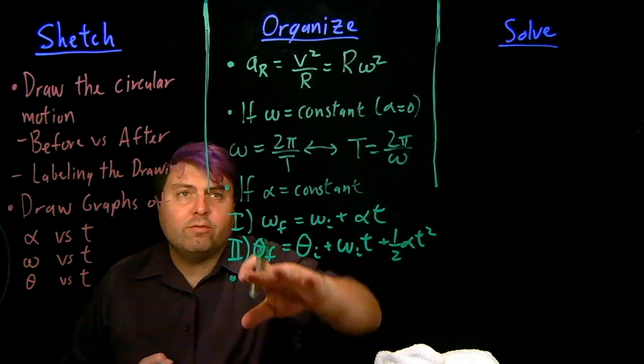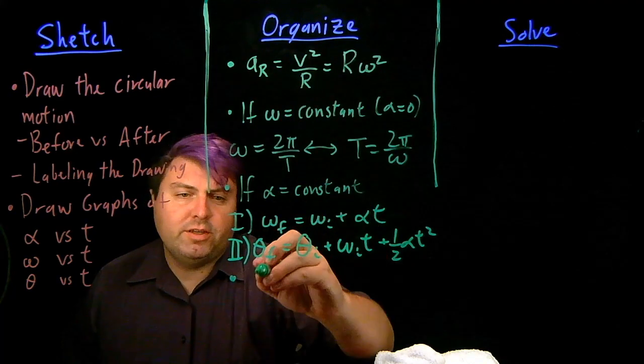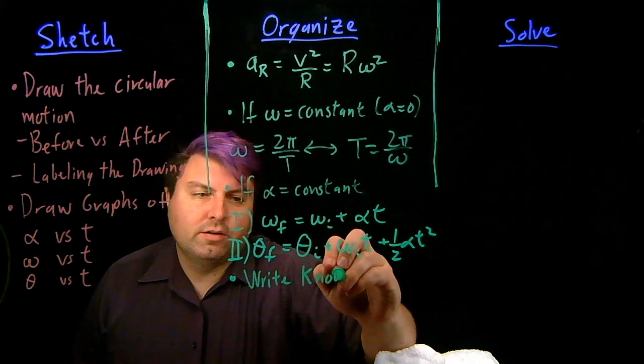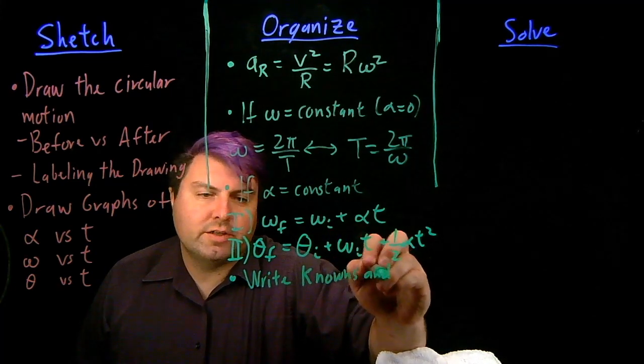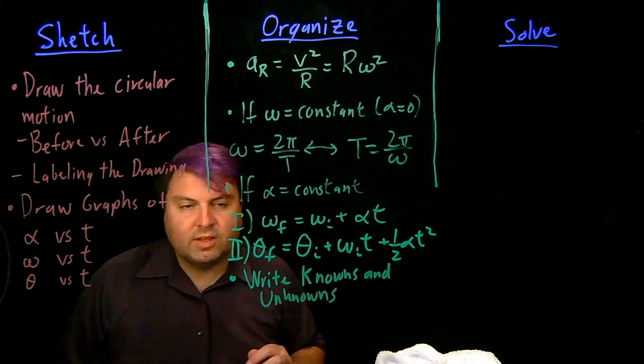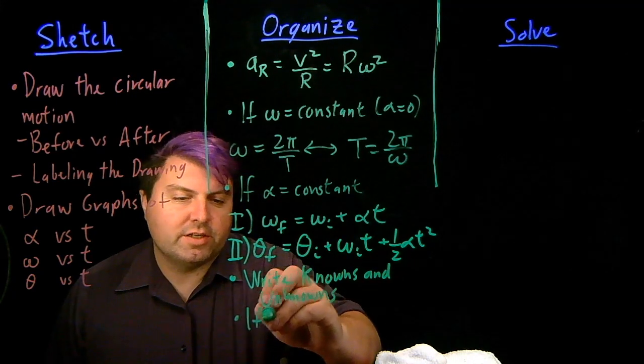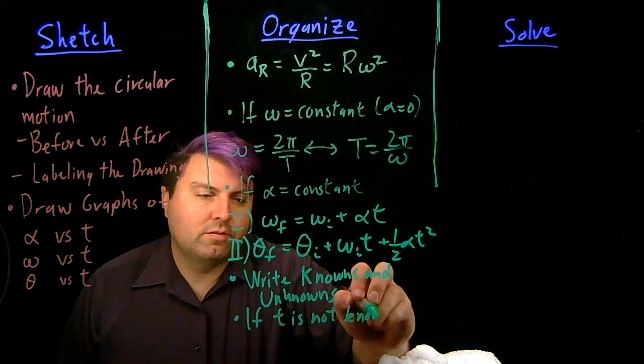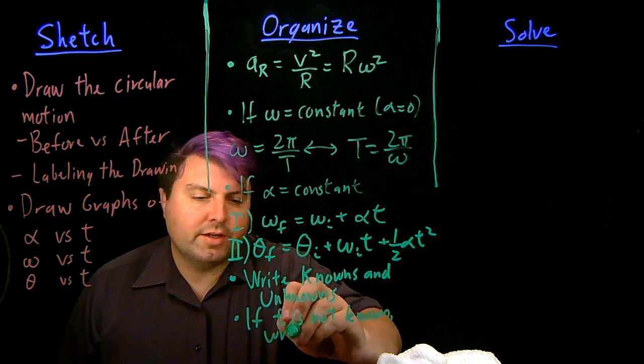So just like we did, whichever of these equations we need to be using, we want to write knowns and unknowns. And again, if T is not known, we want to write it as unknown.